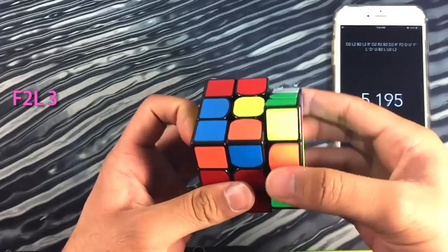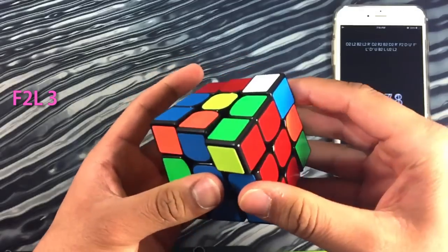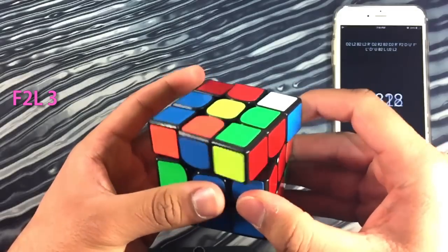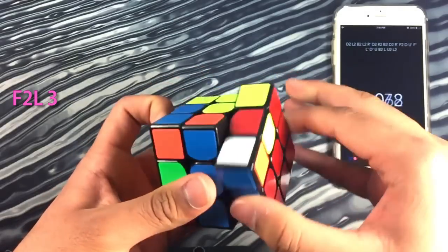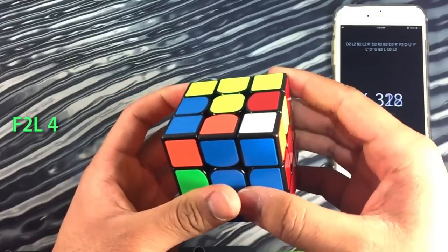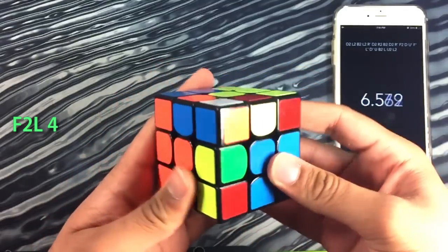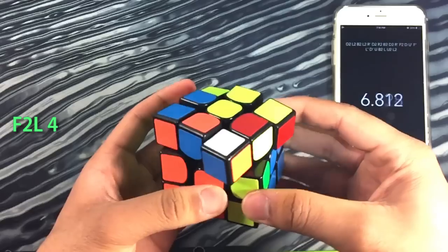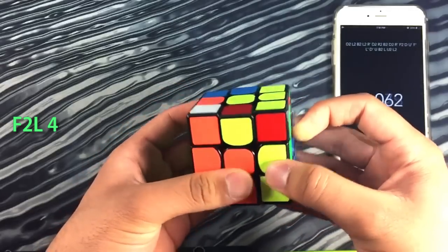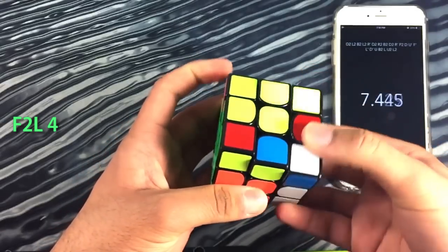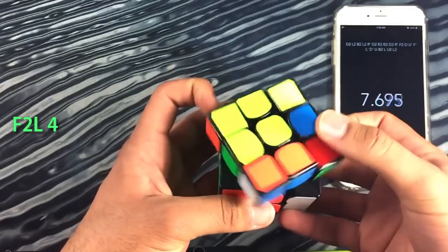Next I solved the green and red pair in the front right position right there and I split it up and I inserted it into the back right. Finally I had the blue and orange pair left and this is a pretty tricky case but I learned this very handy algorithm and I highly recommend you learn it as well because it will really help you solve this case and I was able to quickly finish that up.